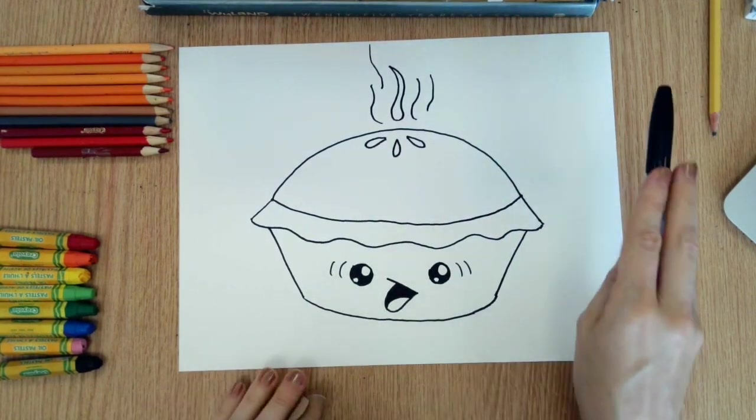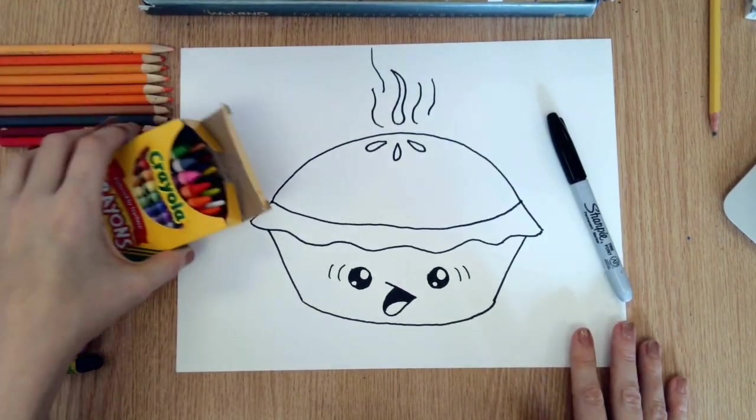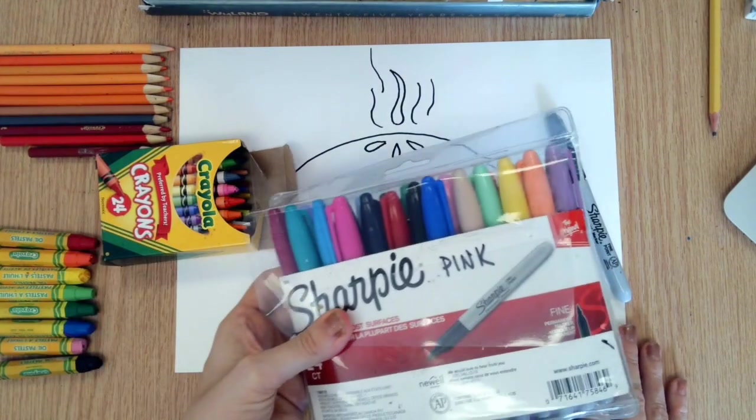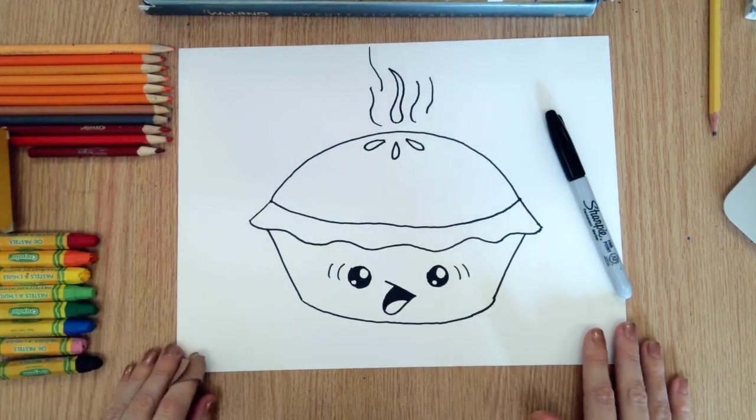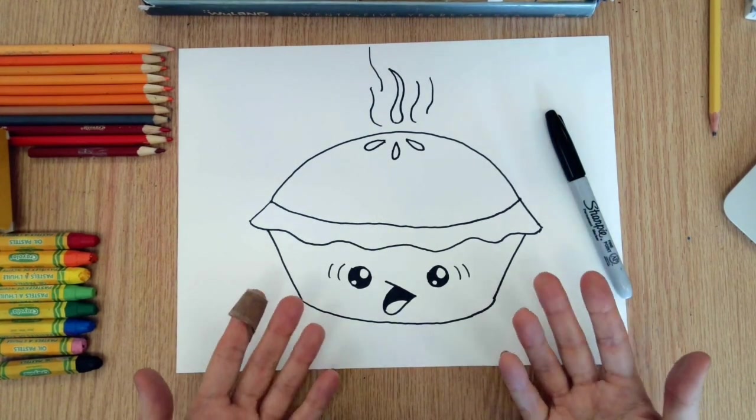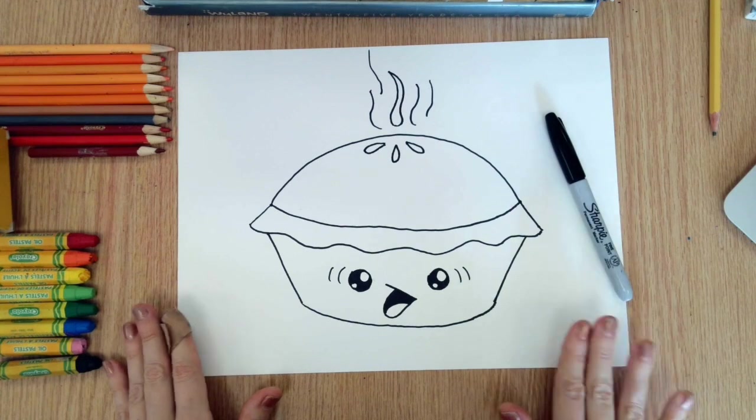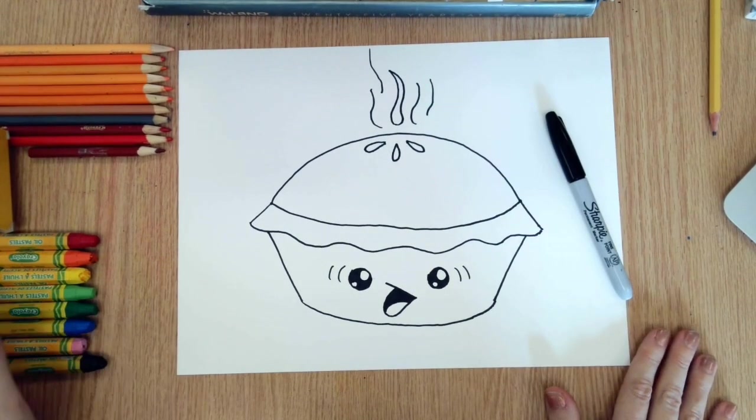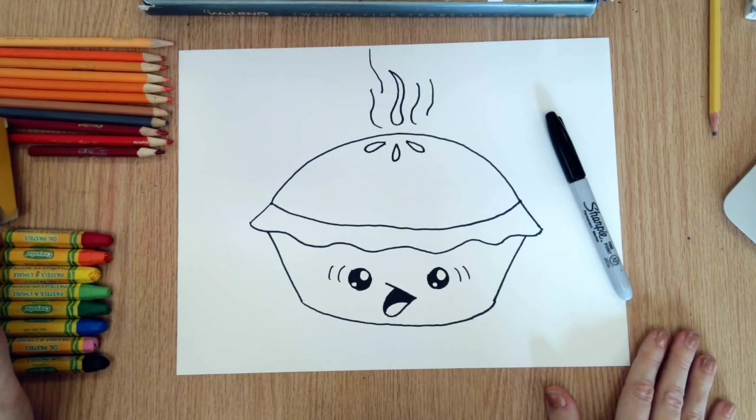Next I want you to color in your pie using anything you have: crayons, colored pencils, maybe you only have markers. Anything will do and it's up to you. You can make your pie a fantasy color or you can make it realistic. You can make it look like real apple pie or pumpkin pie or blueberry pie. That's up to you. If you know how, please take a picture and upload it to Google classroom so I can see these. And I will see you next week. Bye!